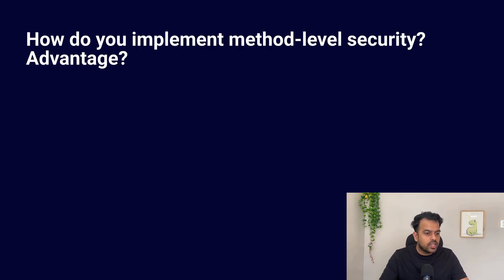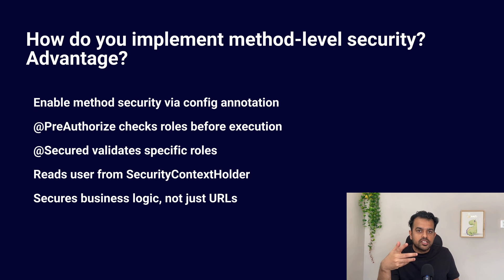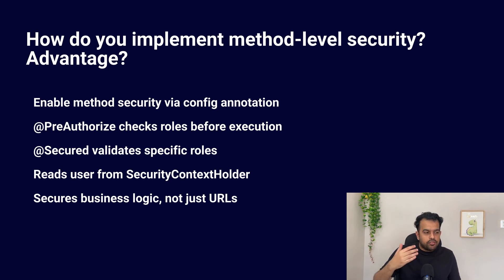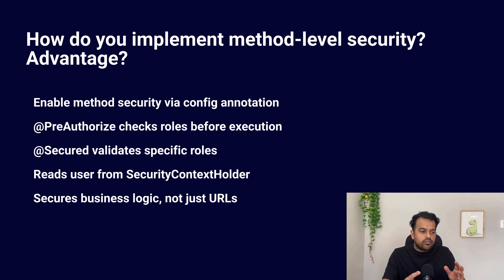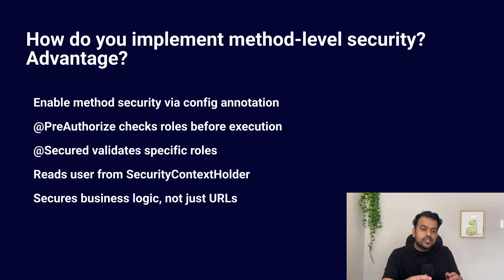The next question is: how do you implement method-level security in a Spring application, and what is the advantage? We enable method-level security using the @EnableGlobalMethodSecurity annotation (the older @EnableMethodSecurity was the previous way). Then we use annotations like @PreAuthorize, which checks before the method runs, or @Secured, which checks the role only. With @PreAuthorize you specify what role is required. These checks read the logged-in user from the SecurityContextHolder. The advantage is that you secure logic at the function level, not just the URL level — so even if someone reaches the endpoint, they still cannot run the protected method unless they pass the check. This gives very tight control on sensitive operations.